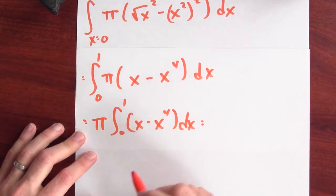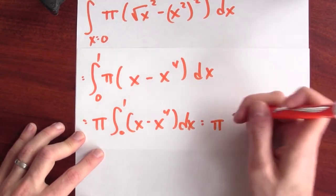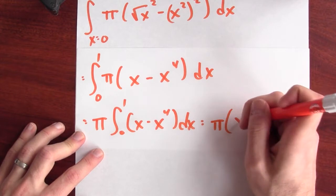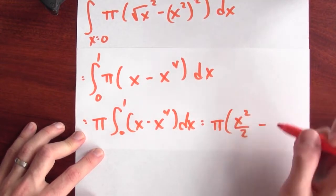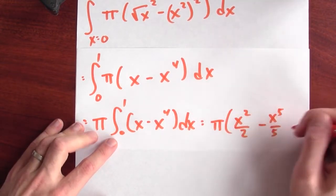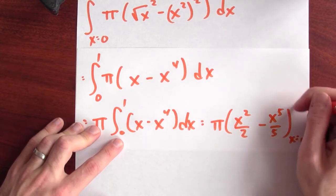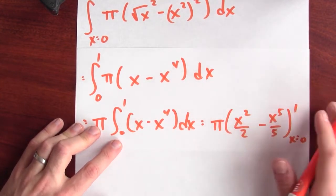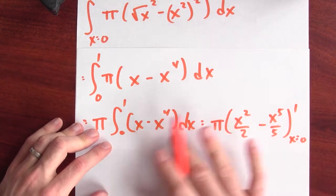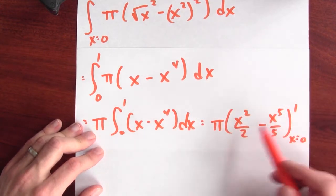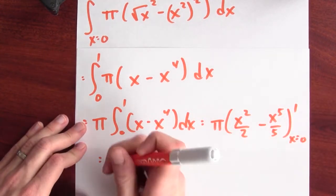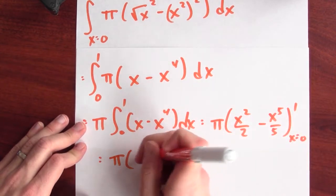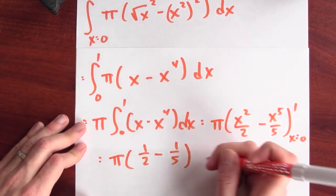And I just got to write down an antiderivative for that. So that's π times antiderivative of x, is x squared over 2, minus antiderivative of x to the 4th, is x to the 5th over 5. I'm evaluating this at 1 and at 0 and taking the difference. But when I plug in 0, I don't get anything. So the answer is just whatever happens when I plug in 1, which is π times 1 half minus 1 fifth.